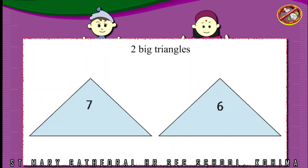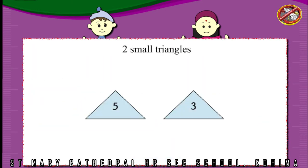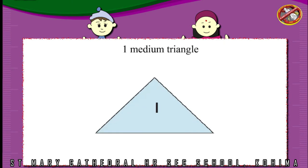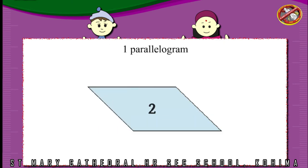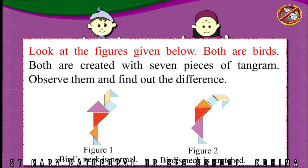Two big triangles, two small triangles, one medium triangle, one square, one parallelogram. Look at the figures given below. Both are birds. Both are created with seven pieces of tangram. Observe them and find out the difference. Figure one: bird's neck is normal. Figure two: bird's neck is stretched.